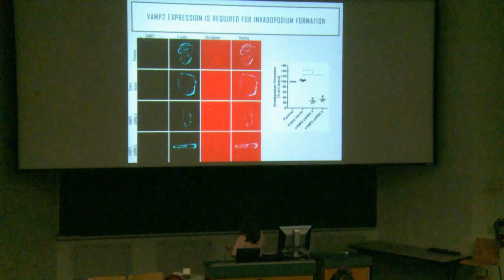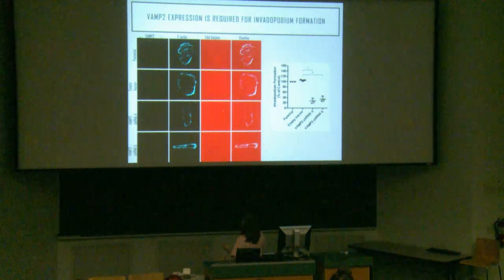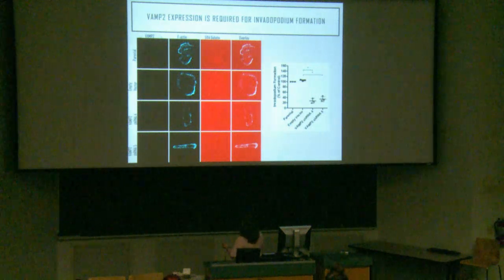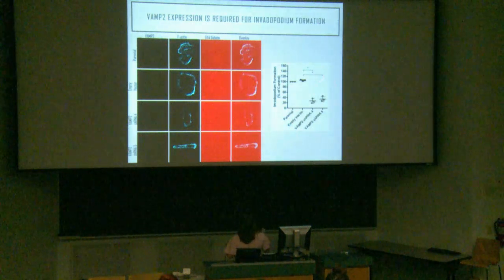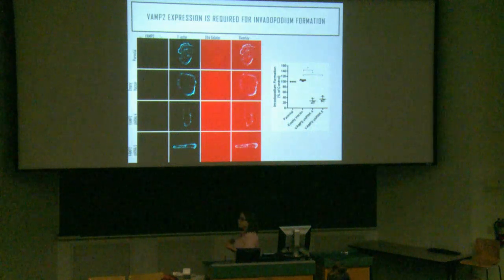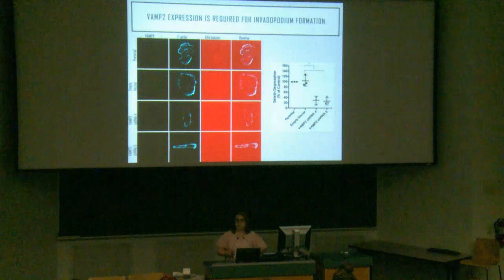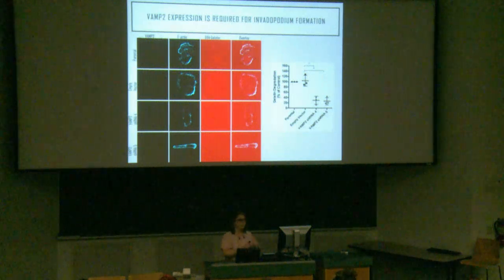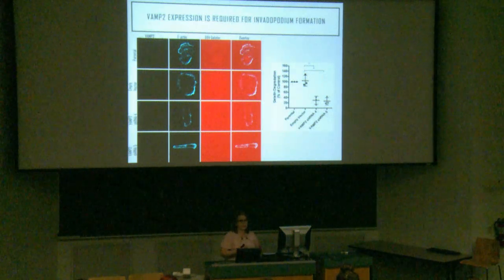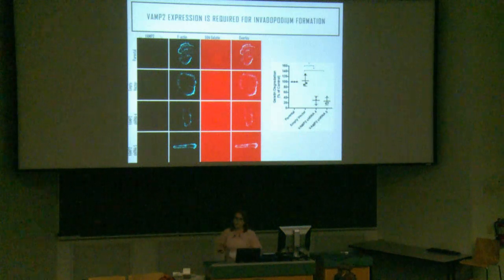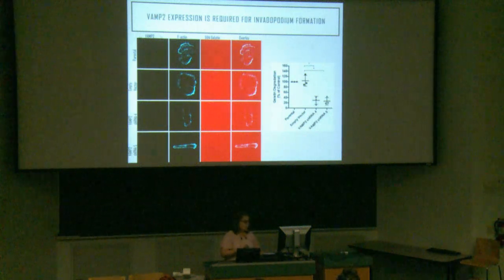Parental cells and empty vector controls are able to form invadipodia. However, when we knock down VAMP-2 via shRNA, we get a decrease in invadipodia formation at a four-hour time point. We also performed a longer gelatin degradation assay, and we see the same phenotype — a decrease in the cells' ability to degrade gelatin, indicating that VAMP-2 expression is required for invadipodia formation.